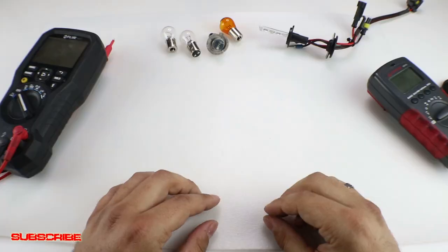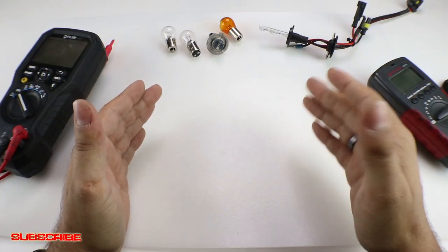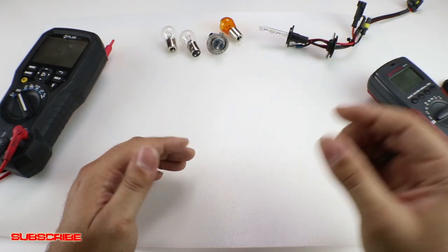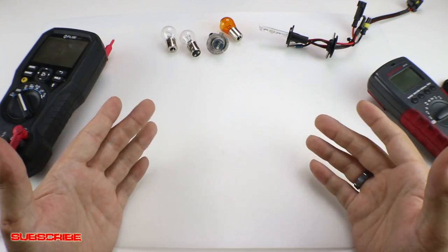So the reason for this video is a lot of people will get a light bulb that goes out and they think they just replace it and then they're gonna fix it, and that ends up wasting a lot of money because sometimes that's not the case.